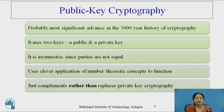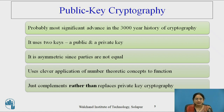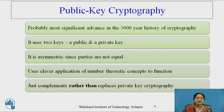Public key cryptography is not a replacement — it is just a complement to private key cryptography. It is probably the most significant advance in the 3000-year history of cryptography. It uses two keys: one public and one private, and is called asymmetric because the parties are not equal. It uses a clever application of number theoretic concepts to the function.